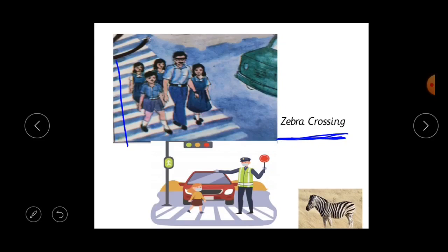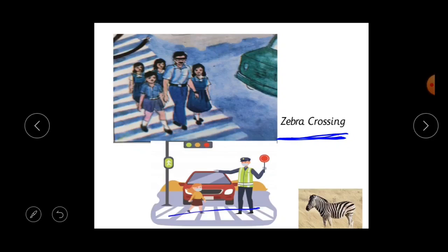So this is called the zebra crossing — white strips in the middle of the road. These white strips are called zebra crossing. Why is it called zebra crossing? Because it looks like the strips on a zebra. Here you can see the zebra is having strips — white and black — and it just looks like a zebra. That is why it is called the zebra crossing. And the pedestrians — pedestrians means the people who walk on foot. So those are called pedestrians. If you are walking on the road, you will become a pedestrian. So pedestrians or people should cross the road only at the zebra crossing. You are not supposed to cross the road in the middle wherever you want — it will not be safe for you. You have to cross the road on zebra crossing.